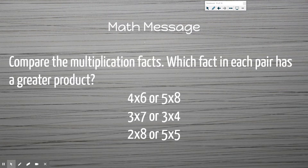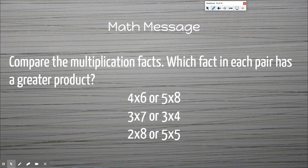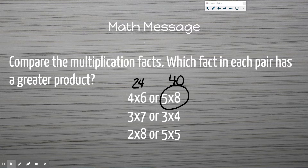Compare the multiplication facts — which fact in each pair has a greater product? Is six times four greater, or five times eight? You should have said five times eight. Five times eight is 40 and six times four is 24. Which is greater: three times seven or three times four? You should have said three times seven — if you're multiplying by a larger number it's obviously going to be bigger. Three times seven is 21 and three times four is 12.